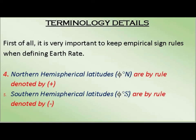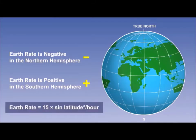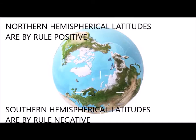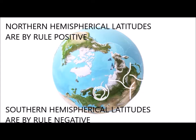Terminology details. Point 4: Northern hemispherical latitudes are by rule denoted by a plus sign. Point 5: Southern hemispherical latitudes are by rule denoted by a minus sign. Point 6: Earth rate equals 15 degrees times the sine of the latitude, in degrees per hour. When an object moves in the northern hemisphere, it deflects from its actual path to the right. Due to this effect, wind in this hemisphere forms a spinning cyclone called a hurricane, which spins counter-clockwise in the northern hemisphere.